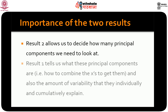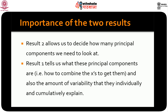Result 2 tells us how many principal components to retain so that we have enough information from the x's. Result 1 tells us what the principal components are and what their corresponding variabilities are. Together these two results tell us how the principal components can be obtained and how they can be used.